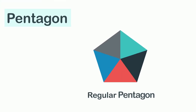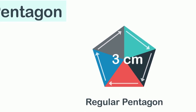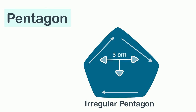Look at this regular pentagon — all five of its sides are three centimeters. This is an irregular pentagon because these three sides are three centimeters but these two sides are five centimeters.